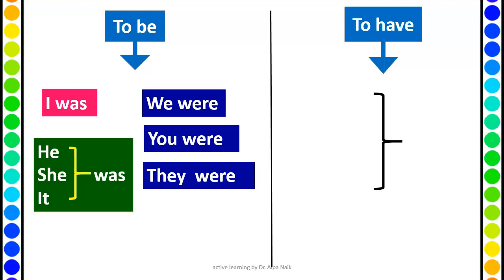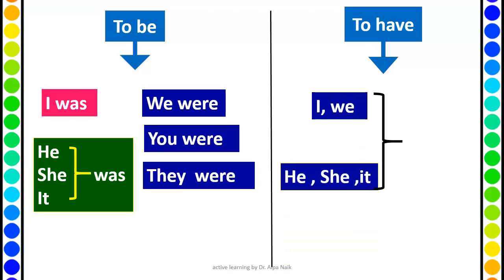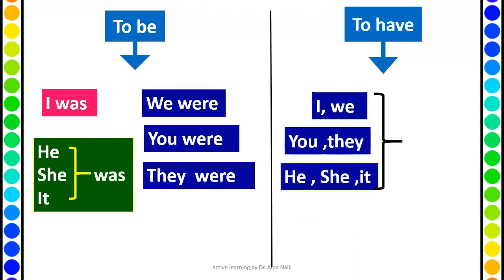Now for the 'to have' form — for every pronoun: I, we, you, they, he, she — the only form is 'had', because the past tense of 'have' is 'had'.